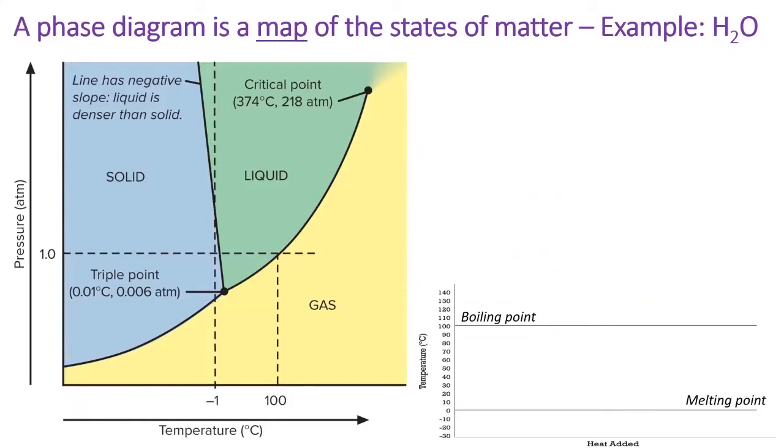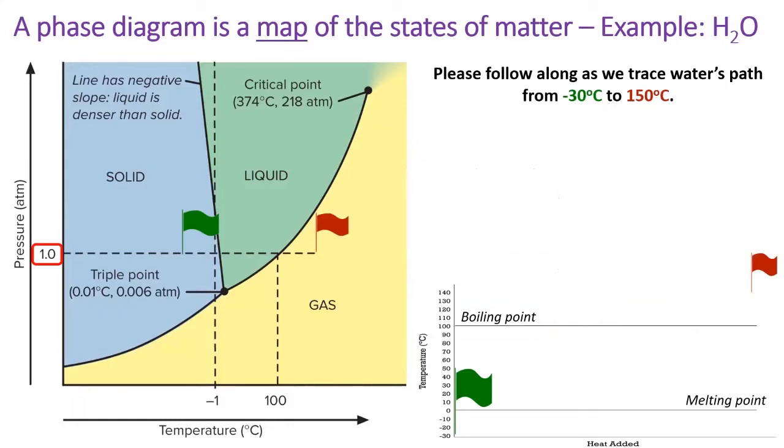Here we have the phase diagram of water. Terrestrial earthlings spend most of their lives at a pressure of around one atmosphere, which means we live on the horizontal dashed line. Please follow along as we trace water's path from negative 30 degrees to 150 degrees. Since we're not changing any pressure, as we heat our very cold ice, we walk east along our phase diagram until we get to the first solid line representing a phase change.